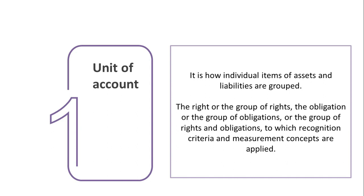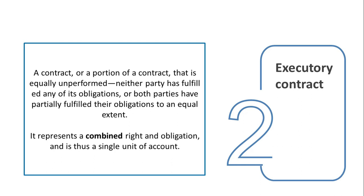The other concept discussed briefly in this chapter is that of executory contracts. According to the framework, an executory contract is a contract or a portion of a contract that is equally unperformed — neither party has fulfilled any of its obligations, or both parties have partially fulfilled their obligations to an equal extent. Because an executory contract represents a combined right and obligation, that combined right and obligation constitutes a single asset or liability, and the entire executory contract is deemed as one unit of account.